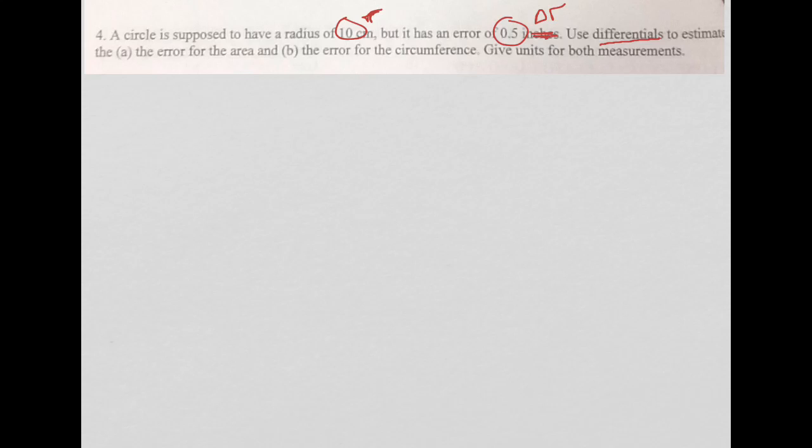And there's an error that should be the same unit, centimeters, inches, whatever. But I want to estimate the error for the area and for the circumference. So my R is 10 for both of these and my delta R is equal to 0.5.